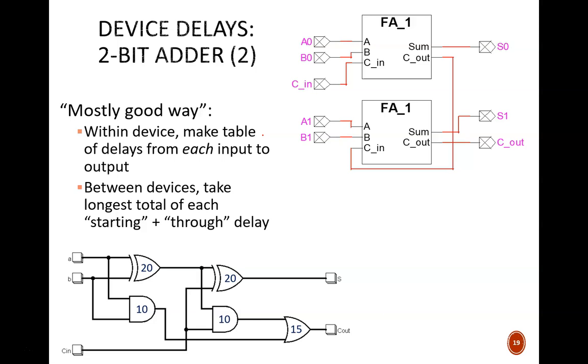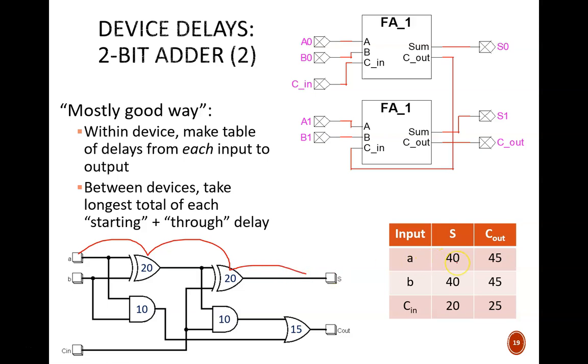Notice this table here. It is computed from the gate level circuit as follows. The longest path for input A to reach output S is 20 plus 20 or 40 nanoseconds. Thus, we write 40 for input A reaching output S. The longest sum from A to C out is 20 plus 10 plus 15 or 45 nanoseconds, and we see that result listed on the table.